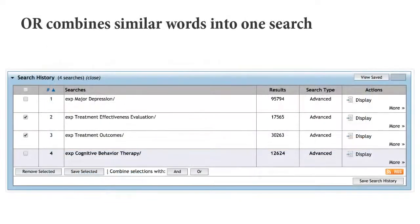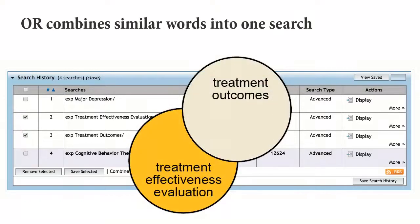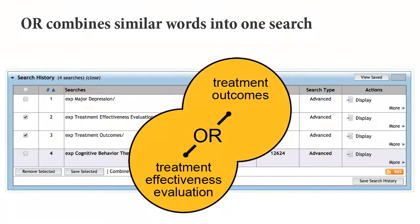First, since treatment effectiveness evaluation and treatment outcomes are related to each other, let's combine them using OR. By combining terms together with an OR, we can retrieve articles about either treatment effectiveness evaluation or about treatment outcomes in one search.